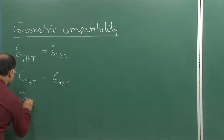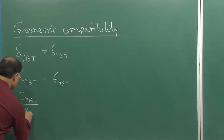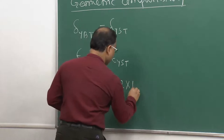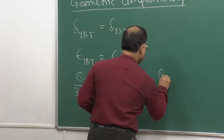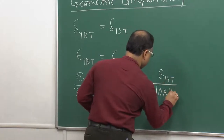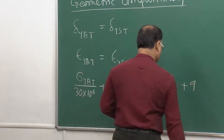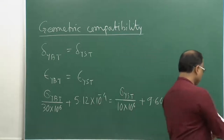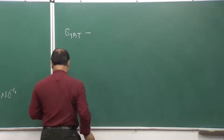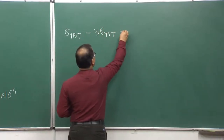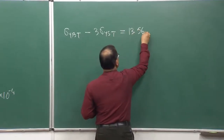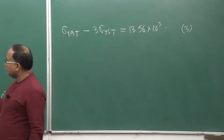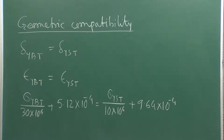Substituting the already calculated values: sigma_yvt / (30×10⁶) + 5.12×10⁻⁴ = sigma_yvt / (10×10⁶) + 9.64×10⁻⁴. From this we get equation 3: sigma_yvt − 3·sigma_yst = 13.56×10³. This equation comes purely from the geometric compatibility of the system under thermal action.